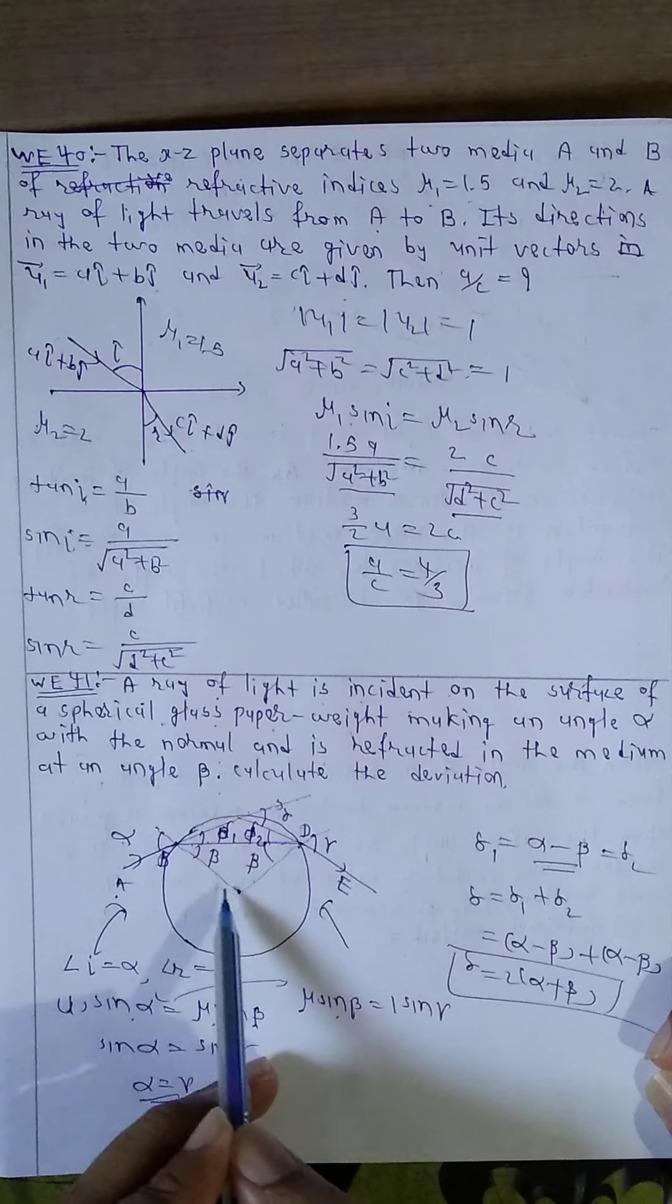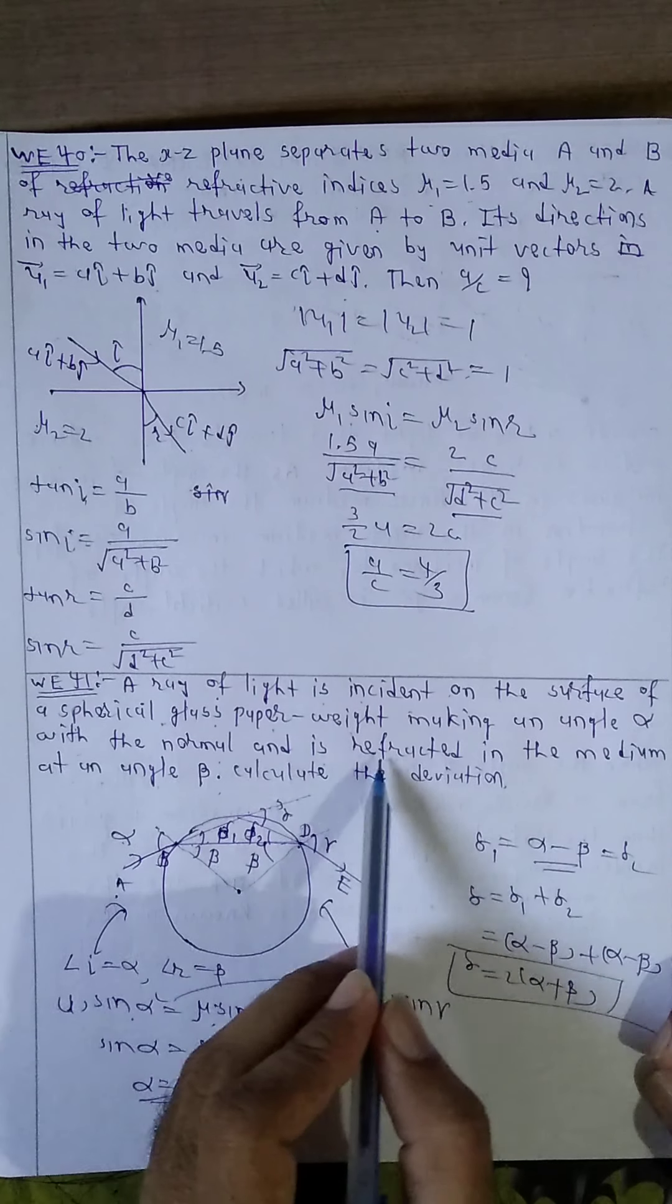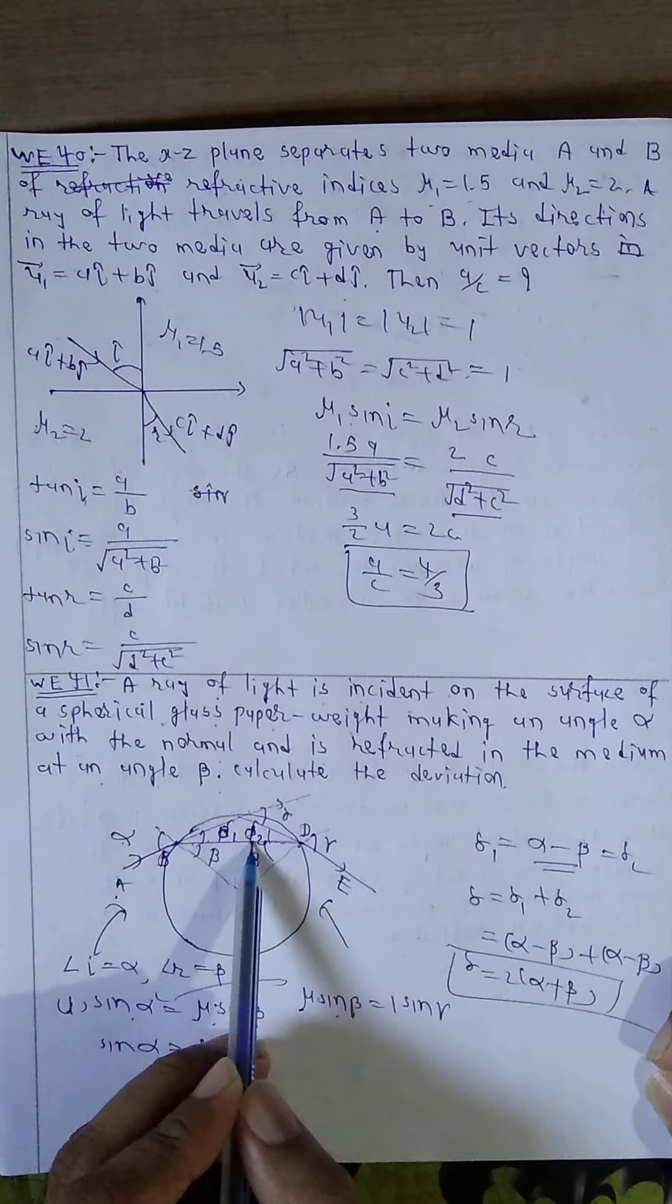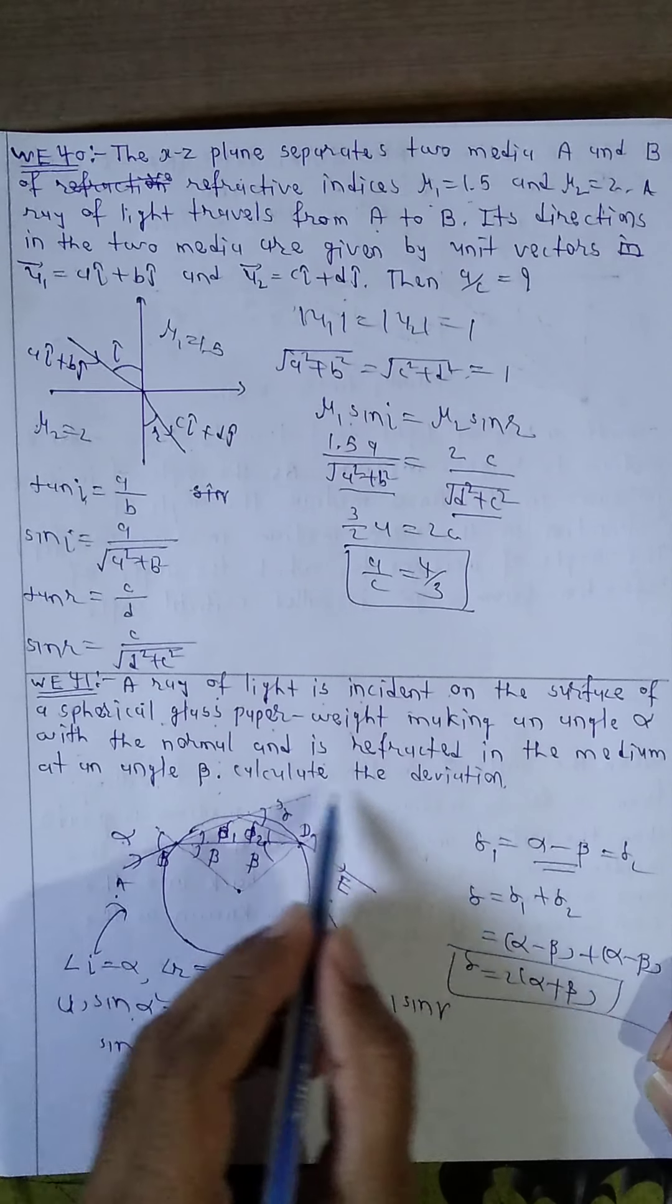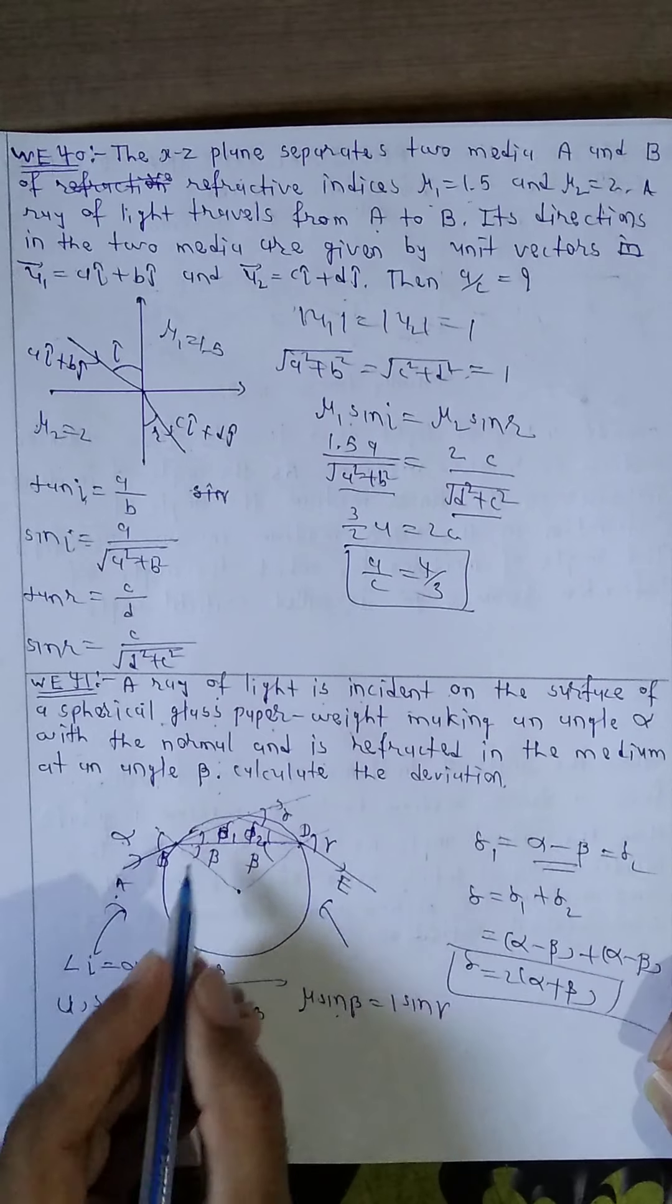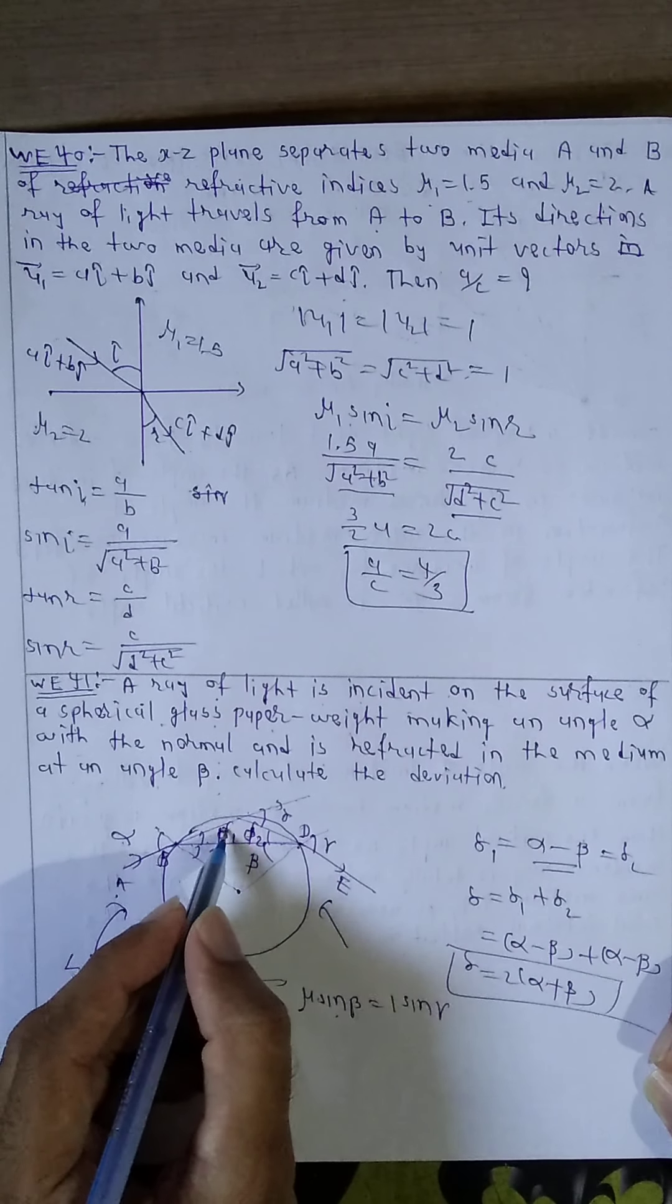A ray is incident at angle alpha with the normal. This is the alpha, this is the normal, and the refracted ray in the medium at angle beta. Calculate the deviation.